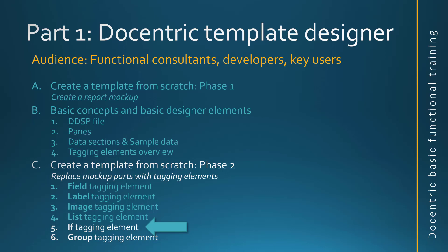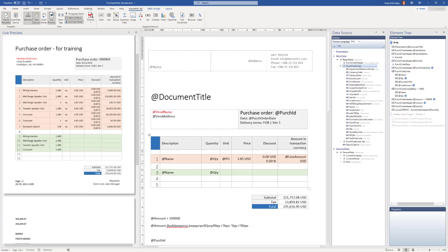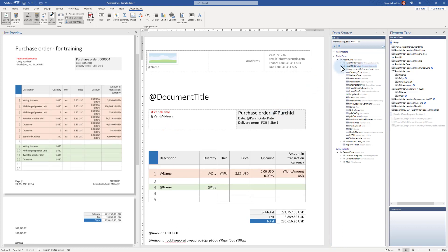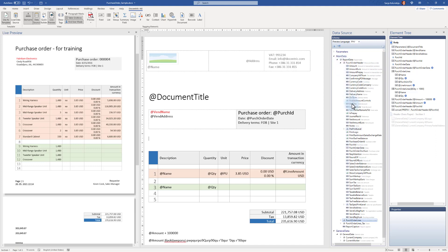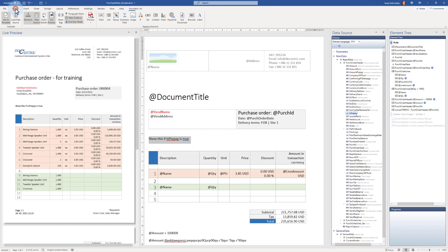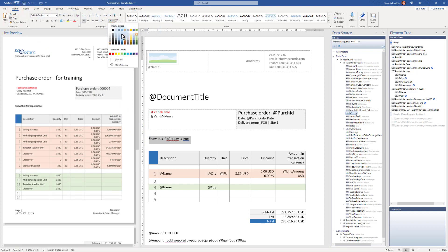In this video we will see how to use the if tagging element. A simple example will be the following: we will use a boolean value, for example 'is prepayment', and we have some part in our design that we want to show only if 'is prepayment' is true. To make it easily identifiable in the layout, I will also use coloring — I will color the whole paragraph a light yellow color.